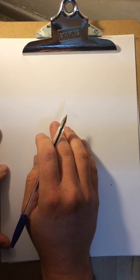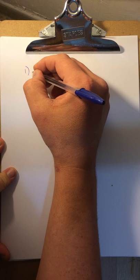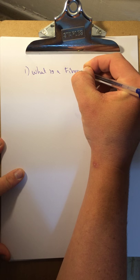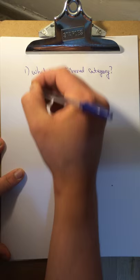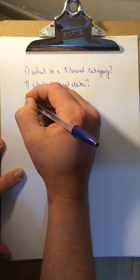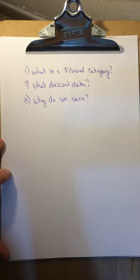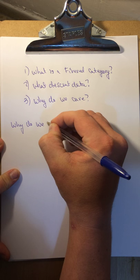In this video I'm going to talk about fiber categories. The goal is to answer three questions: what is a fiber category, what is descent data and the category of descent data associated to a fiber category, and why do we care.